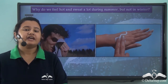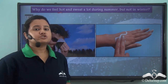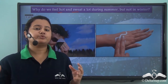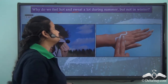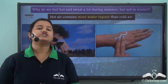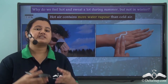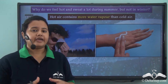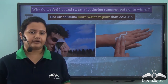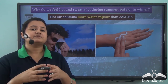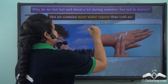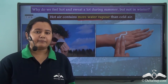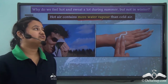During summer we feel hot and sweat a lot, while during winter our skin feels dry and we have to apply moisturiser. This happens because heat increases intermolecular spaces between air molecules, so warm air has more capacity to hold moisture. Warm air contains less air molecules and more water vapour than cold air. During summer, the air becomes saturated with water vapour, so sweat evaporates less rapidly and we feel hot and sticky.